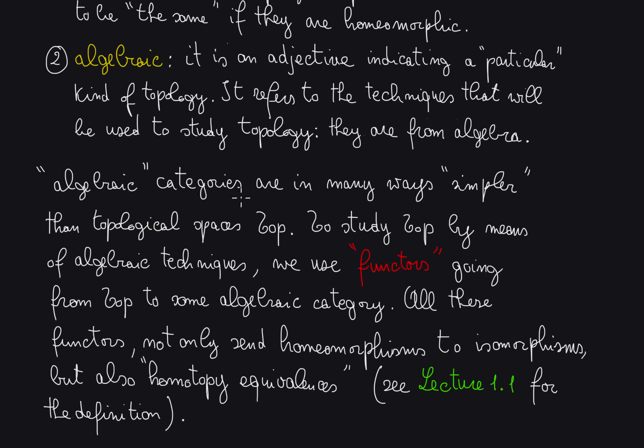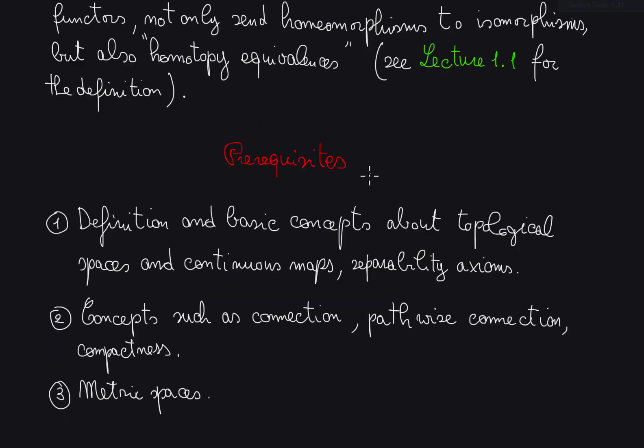Typically, algebraic categories will be things like the category of groups, category of modules over a commutative ring, or even non-commutative rings. The prerequisites for this course are essentially of three kinds.